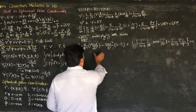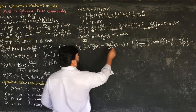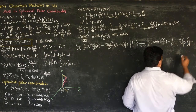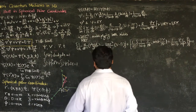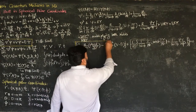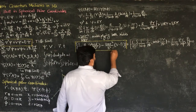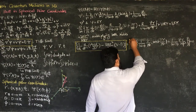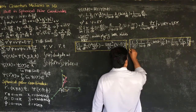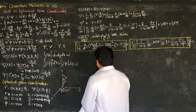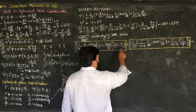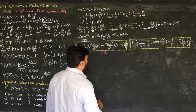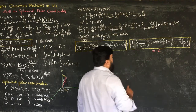We have now separated the radial portion and the angular portion, and together they equal zero. This separation means that if one part equals a constant c, then the other must equal minus the same constant, so they cancel and yield zero.